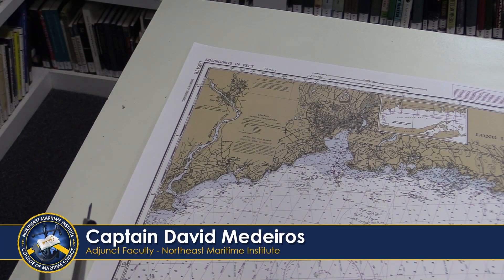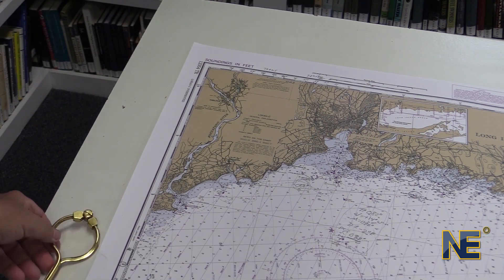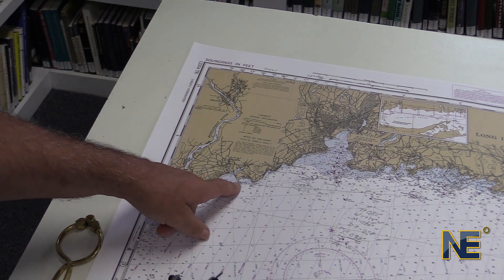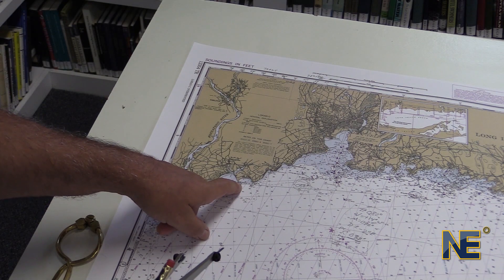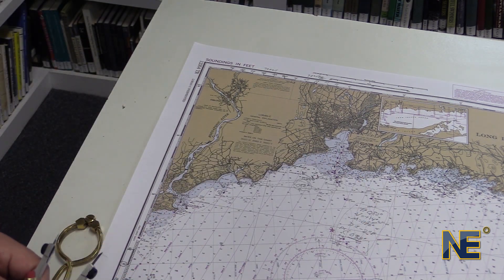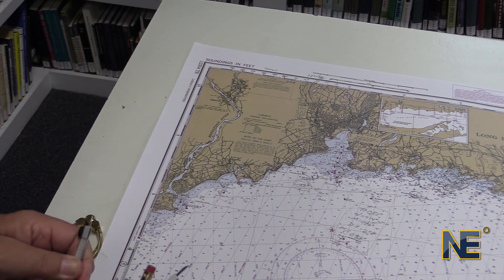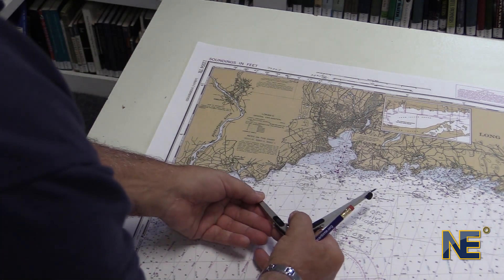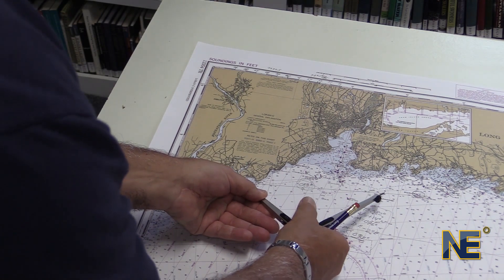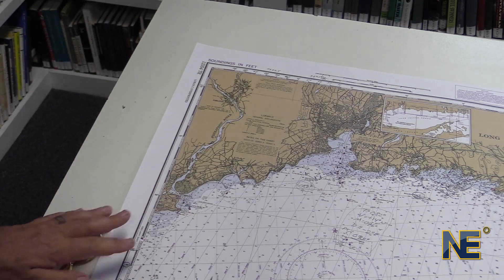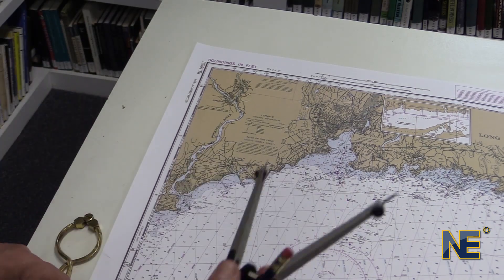Now let's determine distance. How far did we go when we left from our spot after Welch's Point and headed to Branford Reef? We can measure that distance. We're going to take our dividers and stretch them out to see if they'll reach — and they won't. So we want to determine a way to find out how far that is.